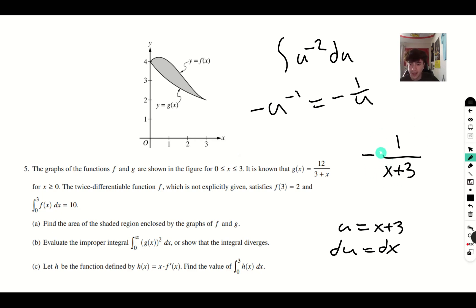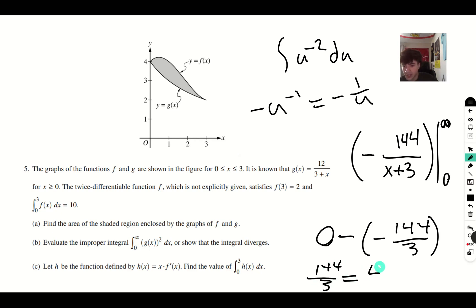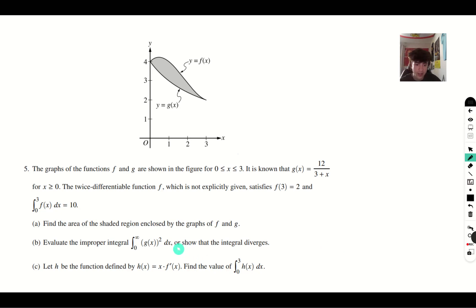So there you have that. And then you multiply by 144. And then the last step is to evaluate from 0 to infinity. So when this is equal to infinity, we get negative 144 over infinity plus 3, which is 0, minus negative 144 over 3. So the answer you get is just 144 thirds, which simplifies to 48. So there you go. That would be your answer for part b.